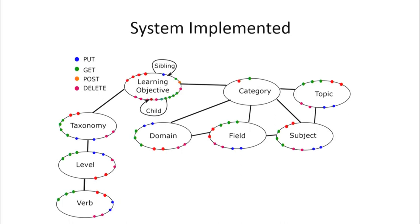This is the overall structure of the system. There are entities with relationships, and the bubbles marked on the entities represent the endpoints. The blue-colored bubble shows the PUT request (update), the green colored bubble shows the GET request, the orange color is the POST request, and the pink color is the DELETE request.